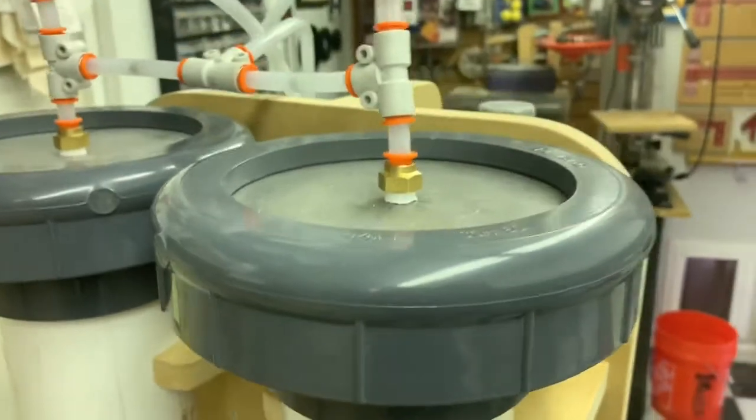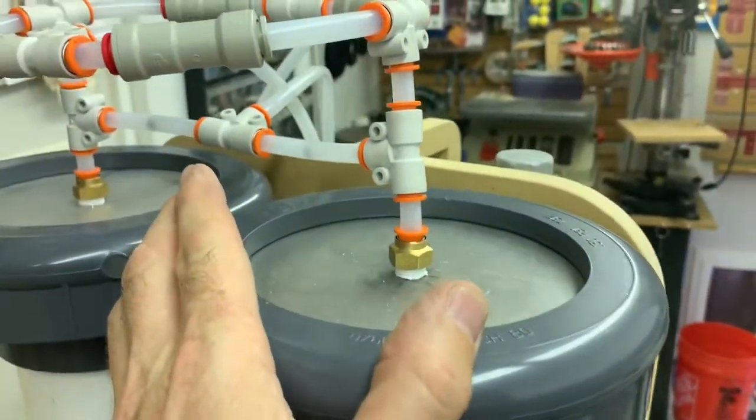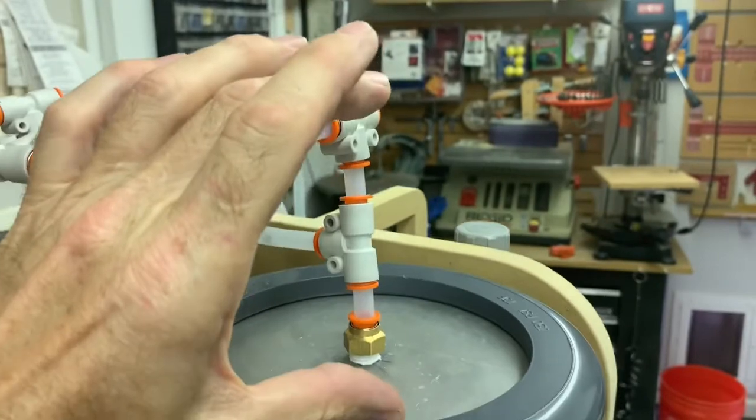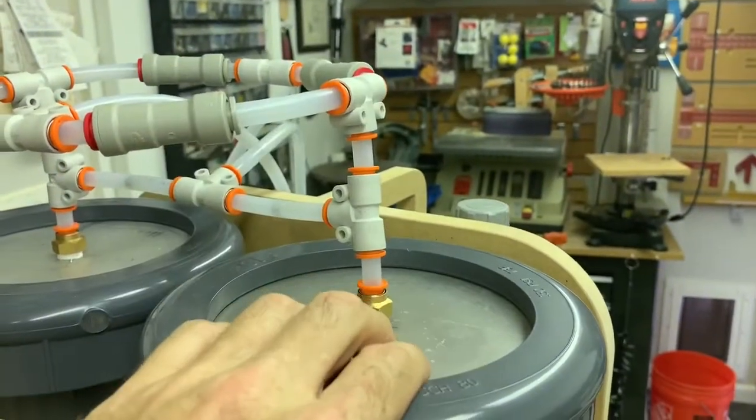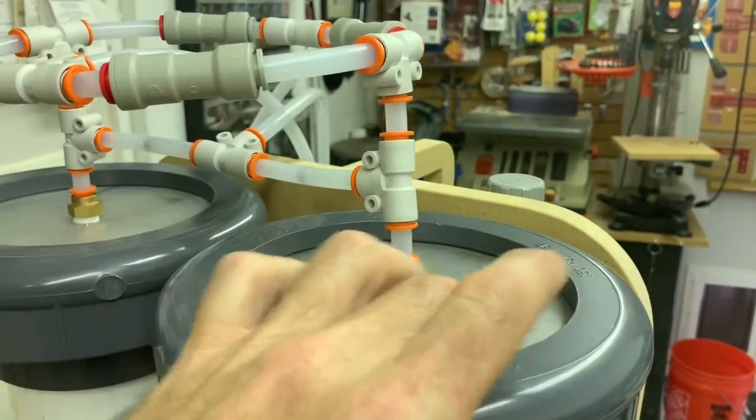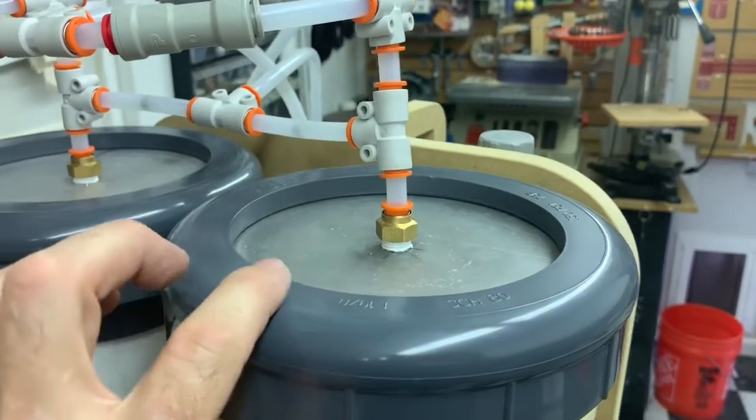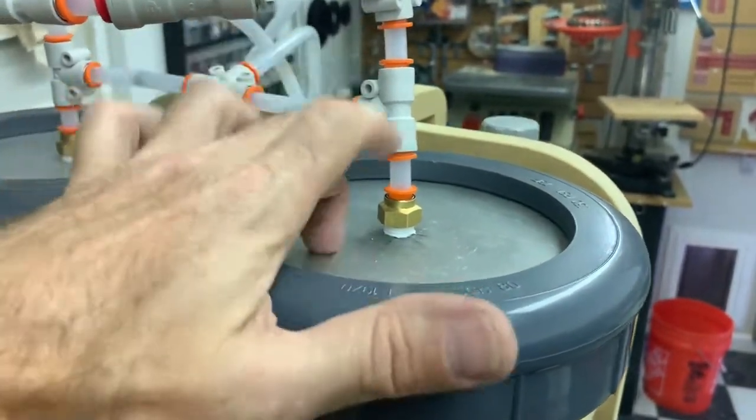Then on the top we did something similar. We eliminated the top half of the unions which were wasting a large amount of volume and made these aluminum plates that seal right up next to the o-ring plate and so we're using half of the union essentially and substituting our own plates.